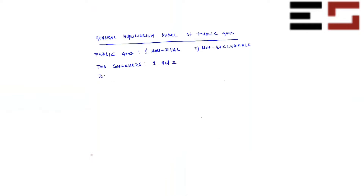And two goods. One is the private good and the other is the public good. Let's call the private good X and let's call the public good G. So G is the public good, X is the private good.